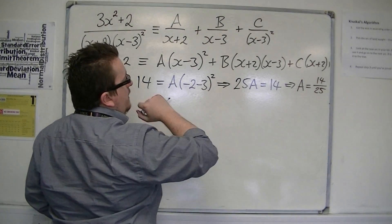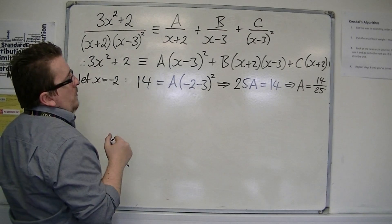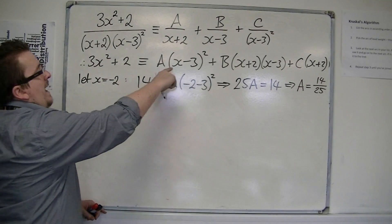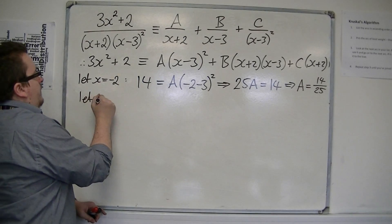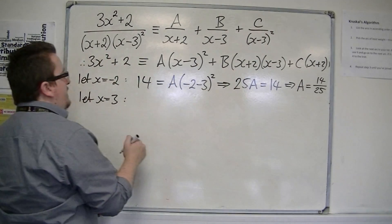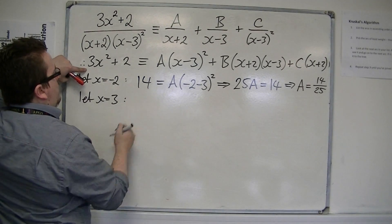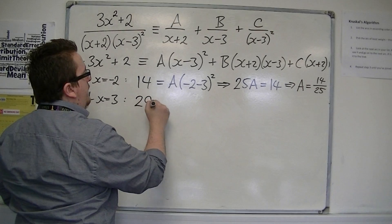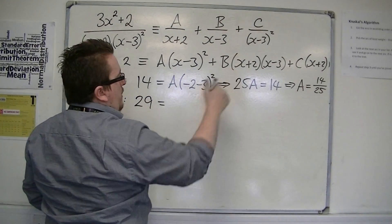Then, to get C rather, I think is the one that I can get here, I'm going to let x equals 3. So, that will cancel out that bracket and that bracket. So, I get 3 times 3 squared, so that's 27, plus 2 is 29.